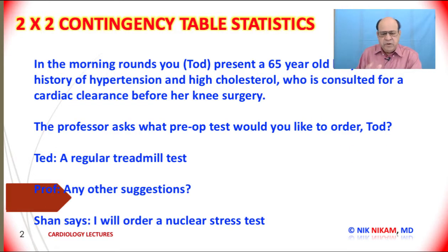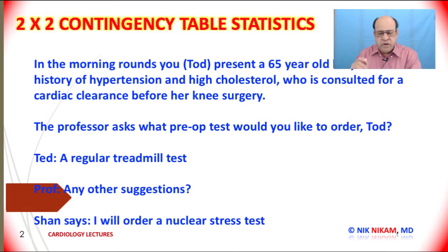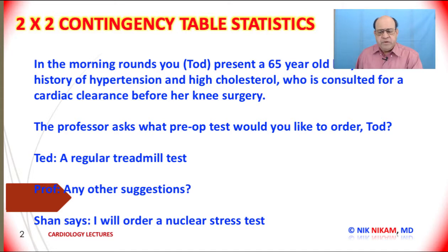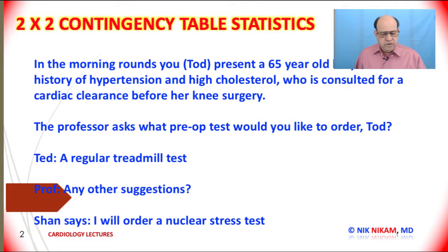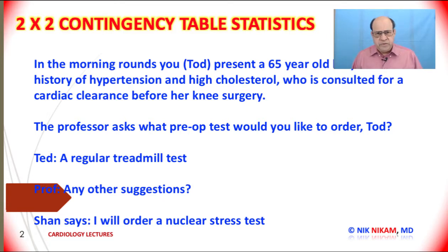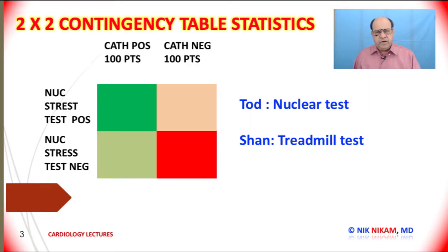In the morning, assume your name to be Todd. You present a 65-year-old lady with a history of hypertension and high cholesterol who is consulted for cardiac clearance before her knee surgery. The professor asks, what pre-operative test would you like to order, Todd? Todd says, a regular stress test. Then the professor asks, any other suggestions? Sean says, no, I will order a nuclear stress test. And the professor says, okay, now we have two different options. How are we going to resolve this difference?